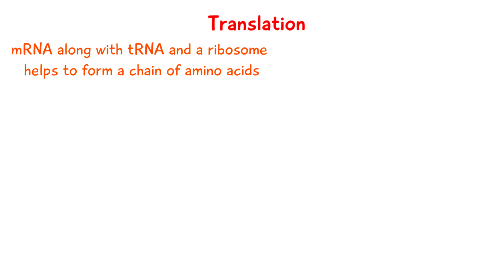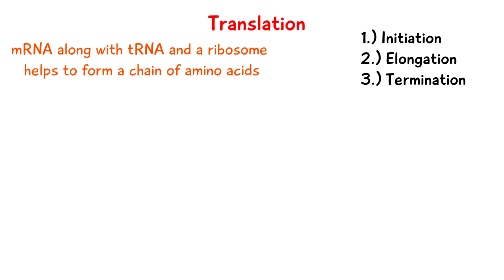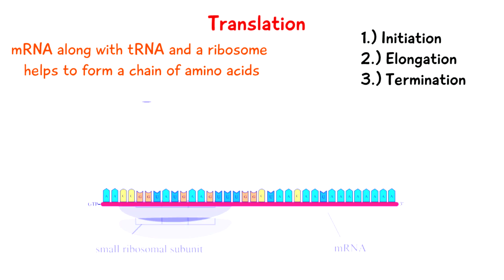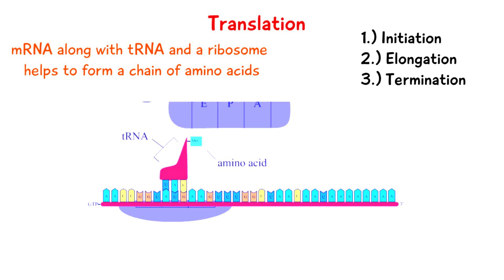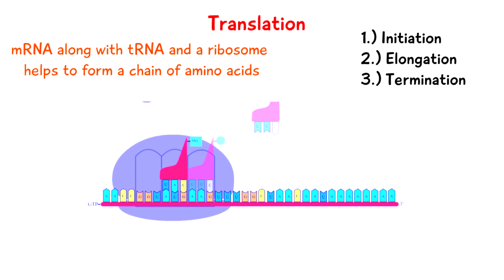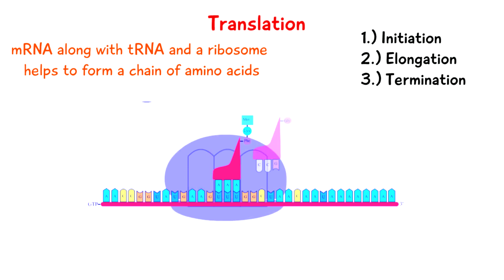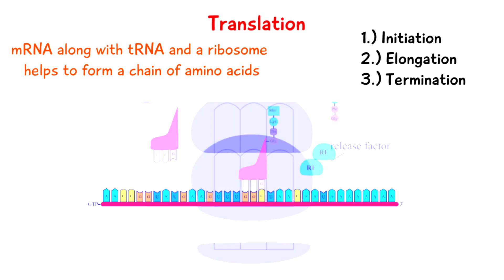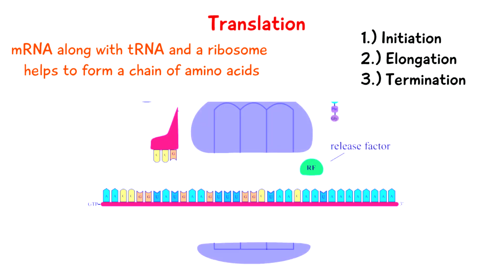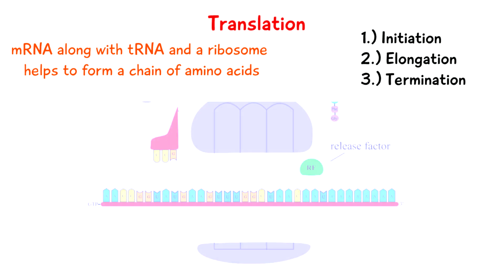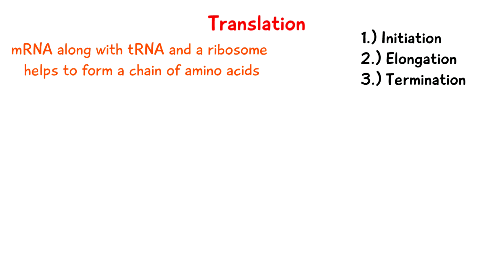Translation occurs in three phases: initiation, elongation, and termination. Initiation is where the ribosome comes together with the mRNA and the first tRNA in the cytoplasm. Elongation is where amino acids are brought to the ribosome by tRNA and start linking together to form a chain. Termination is where the chain of amino acids is released, forming a sequence of amino acids which then form polypeptide chains and eventually proteins.